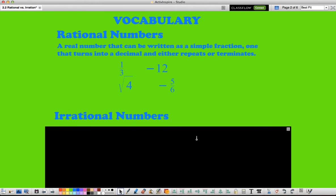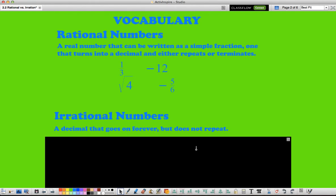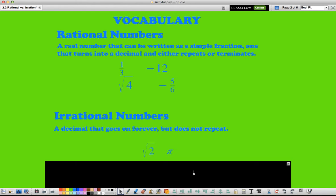Irrational numbers have decimals that go on forever but don't repeat. Examples of irrational numbers would be like the square root of 2. We talked about this briefly with our perfect squares. If it's a square root of not a perfect square, then it's an irrational number. It's going to go on forever. And pi, pi we know goes on forever, so pi is actually an irrational number.